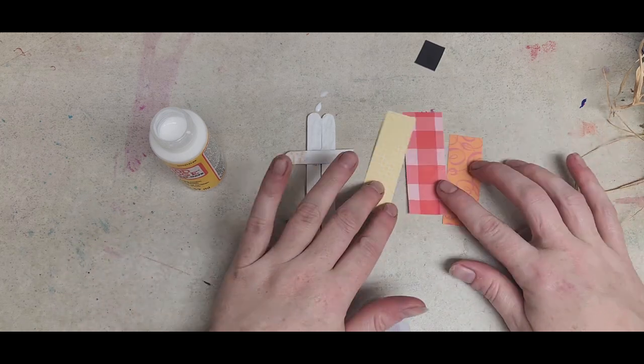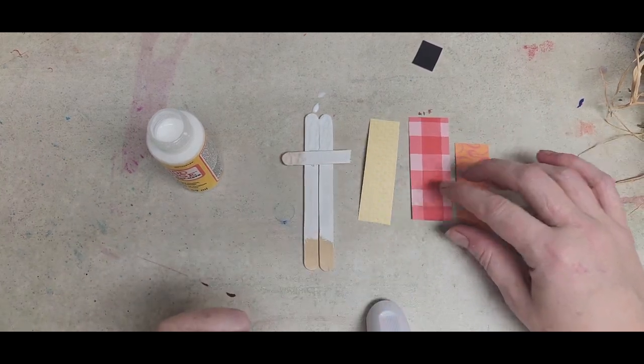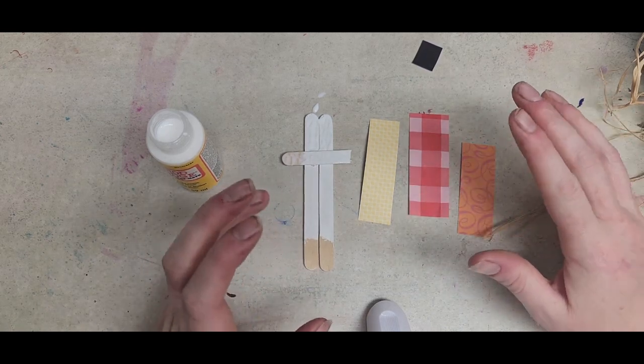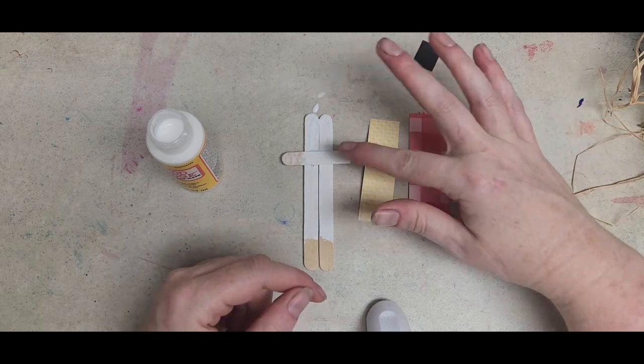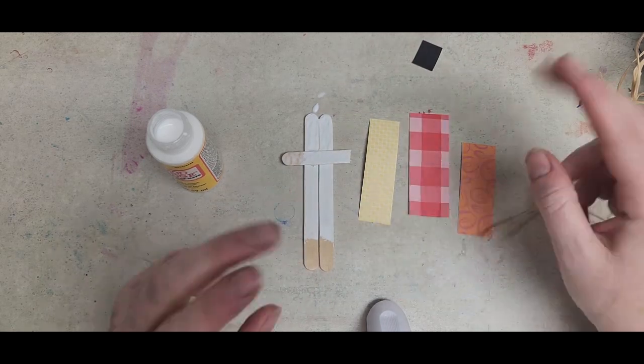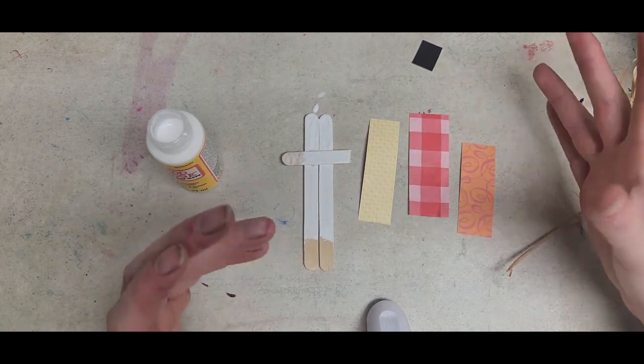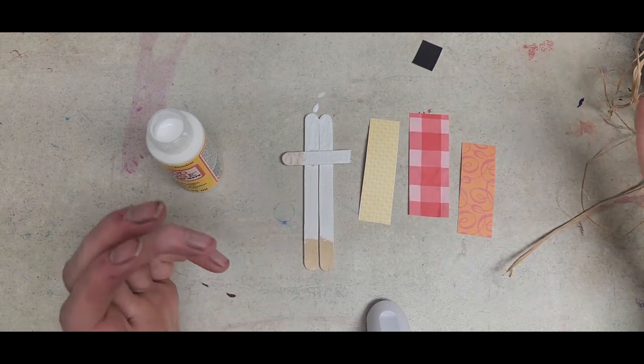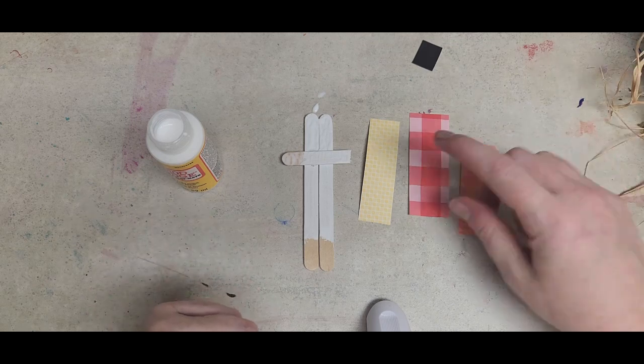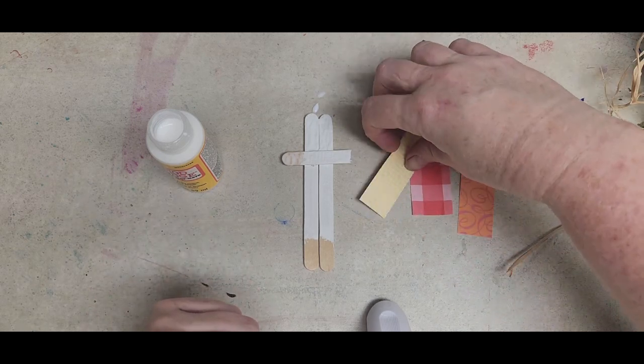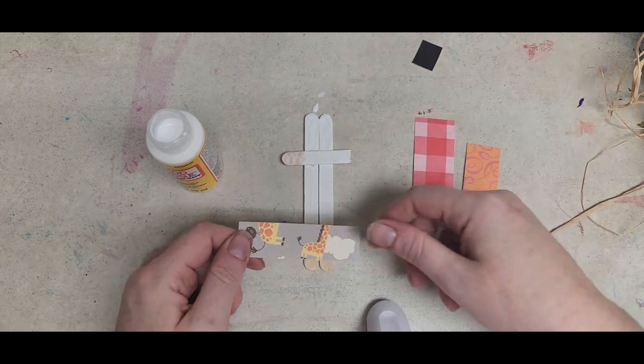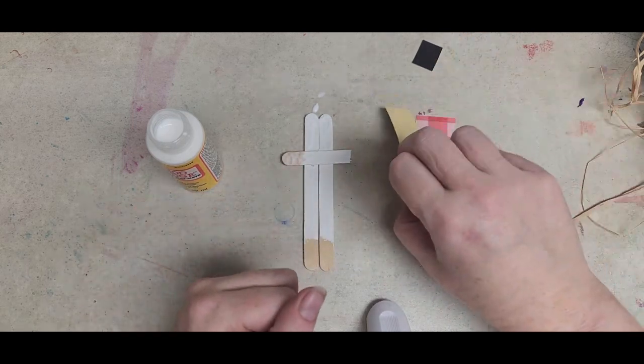So, while we let it dry, we're going to choose what colors we want for what. I gave you three different color choices. You can put them on your little scarecrow however you would like. You can do one color for his hat, one color for his face, one color for his clothes. You can mix and match and tear them into little pieces and make them like a confetti scarecrow. It's really up to you.